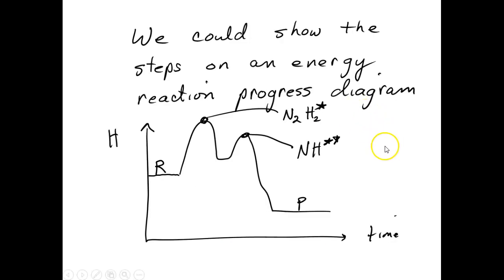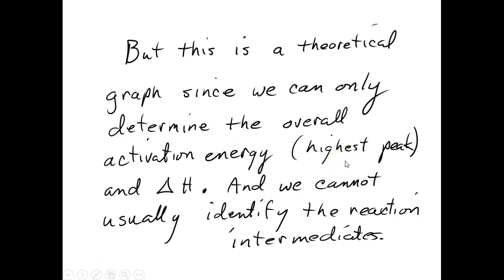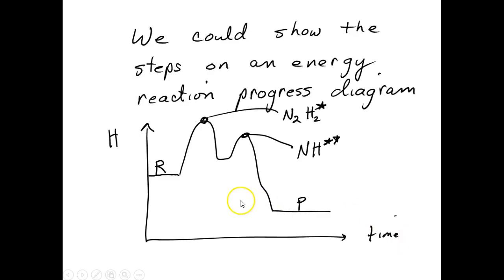We can diagram this reaction progress. Here are our reactants, and here's that first step, which was the slow step. The slow step is the one with the biggest activation energy — it controls the rate. Subsequent steps are going to have smaller activation energies. This is strictly a theoretical diagram, because we can only measure the overall delta H and the biggest activation energy, which is the only one that controls the rate. But for a proposed mechanism, we can draw the other smaller activation energies for the other steps.